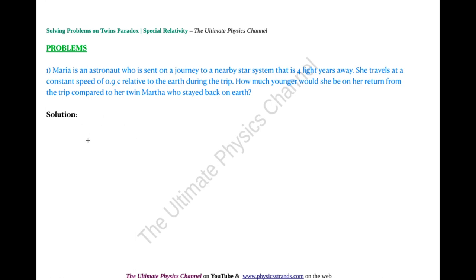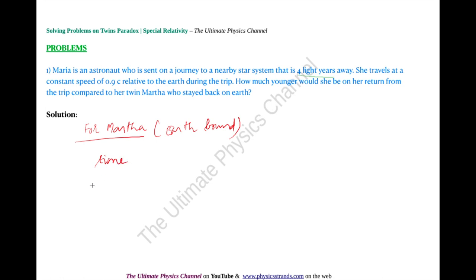For Martha, the earth-bound twin, the time taken for the journey equals the distance over the velocity. The distance is four light years and the speed is 0.9c. Since light years in the numerator and c in the denominator cancel, the time is 4 / 0.9 years. Martha would calculate that Maria would take 4.44 years for the one-way journey, so the total time for the round trip is 2 × 4.44 = 8.88 years.